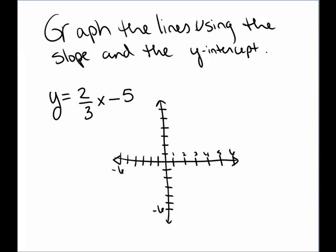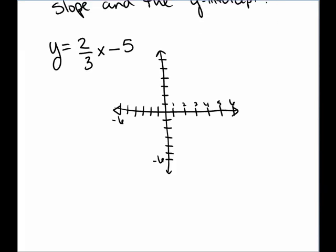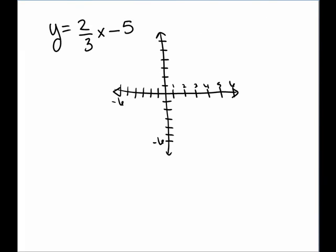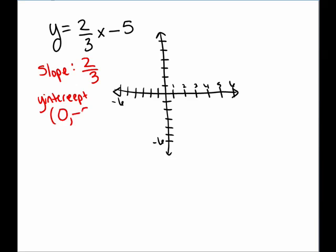In the first example, we're asked to graph the line y equals 2/3 x minus 5. I notice that this equation is given to us in slope-intercept form. I first identify for myself the slope is 2/3. And I write down the y-intercept as a point: the y-intercept is the point (0, -5). Remember that y-intercepts occur where the x value is zero. So the slope is clearly 2/3, and the y-intercept is given right there in the equation.